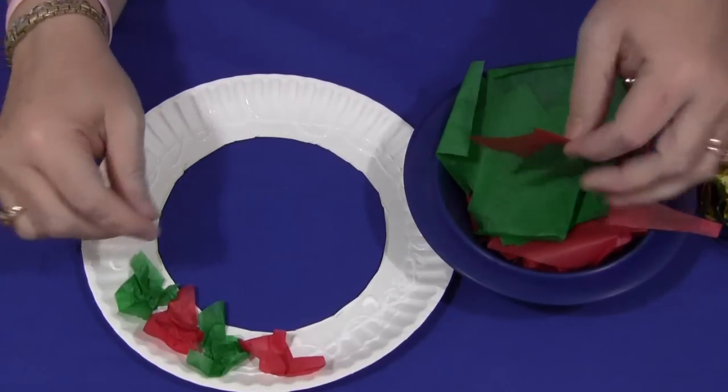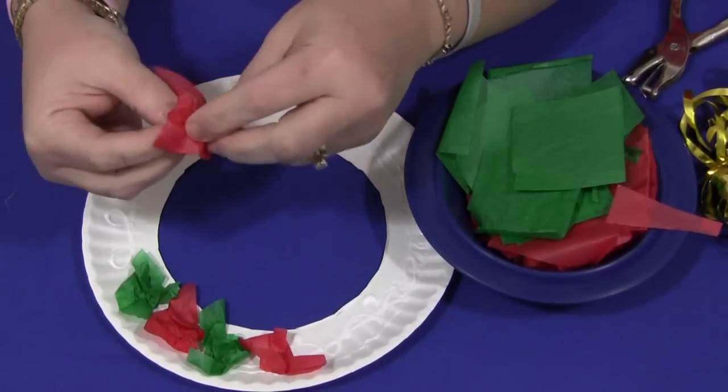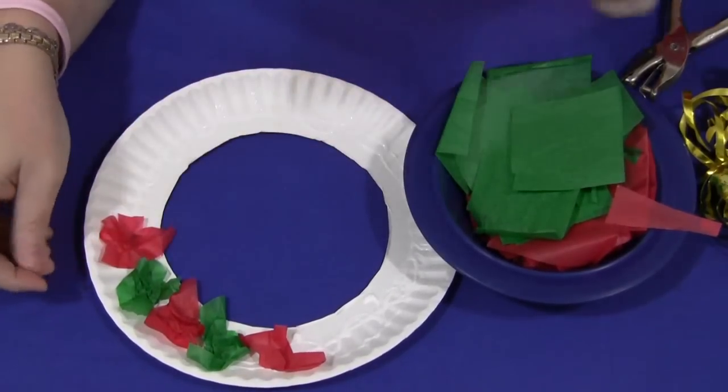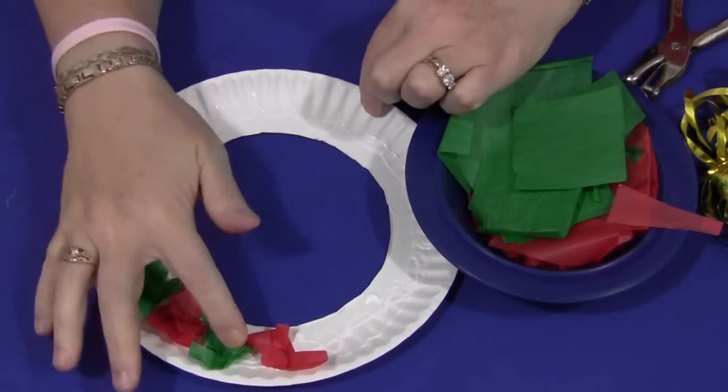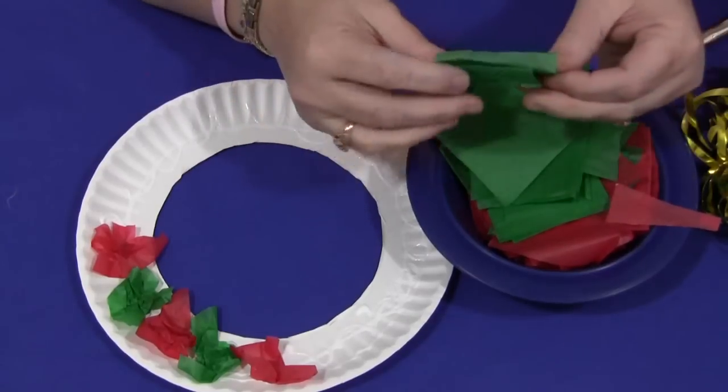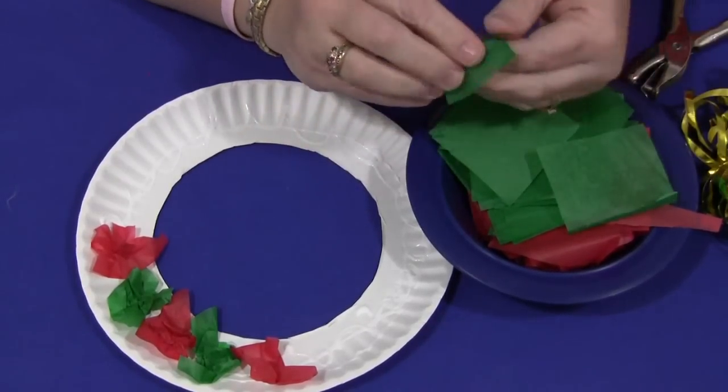Depending on the age of the children, once they've gone around once, some children like to go back and fill in white spaces to make it more full. But you don't have to do that, especially with younger ones. Going around once may be all they can do.